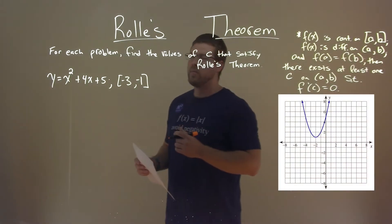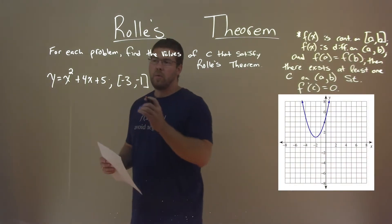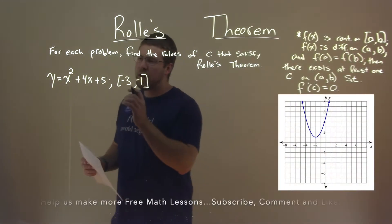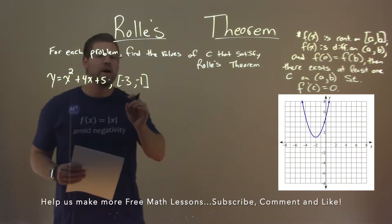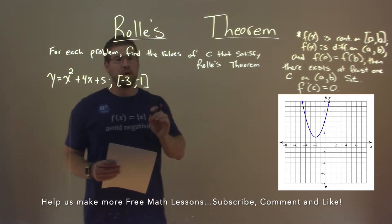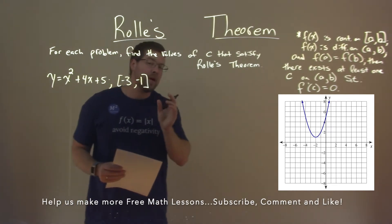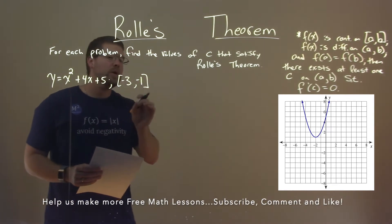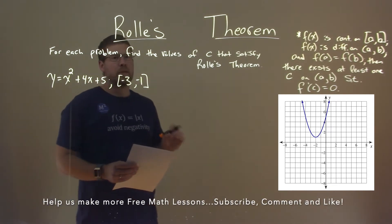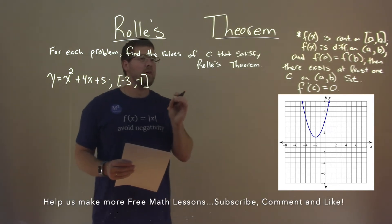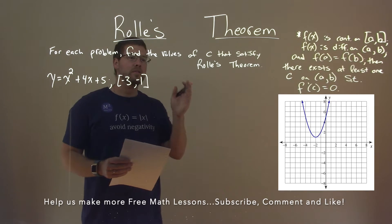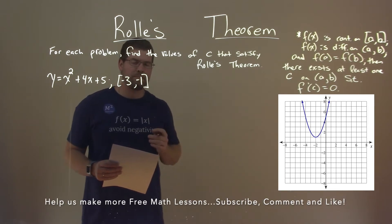We're given this problem right here: y equals x squared plus 4x plus 5, from the interval from negative 3 to negative 1, and we want to find the values of c that satisfy Rolle's Theorem.